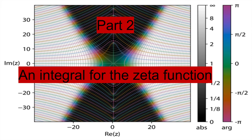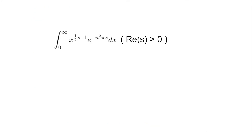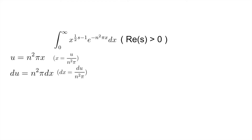Now consider the integral from 0 to infinity of x to the power of 1 half s minus 1 times e to the negative n squared pi x dx, where s has a positive real part. We use the substitution u equal to n squared pi x, so du equals n squared pi dx. Plugging these into our integral, we get the integral of u over n squared pi to the power of 1 half s minus 1 times e to the negative u, du over n squared pi.